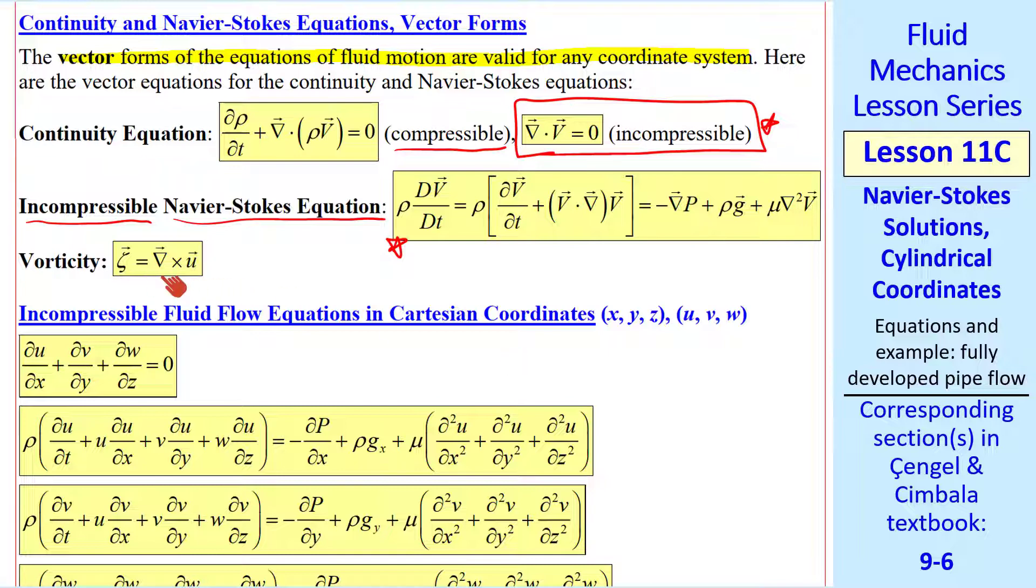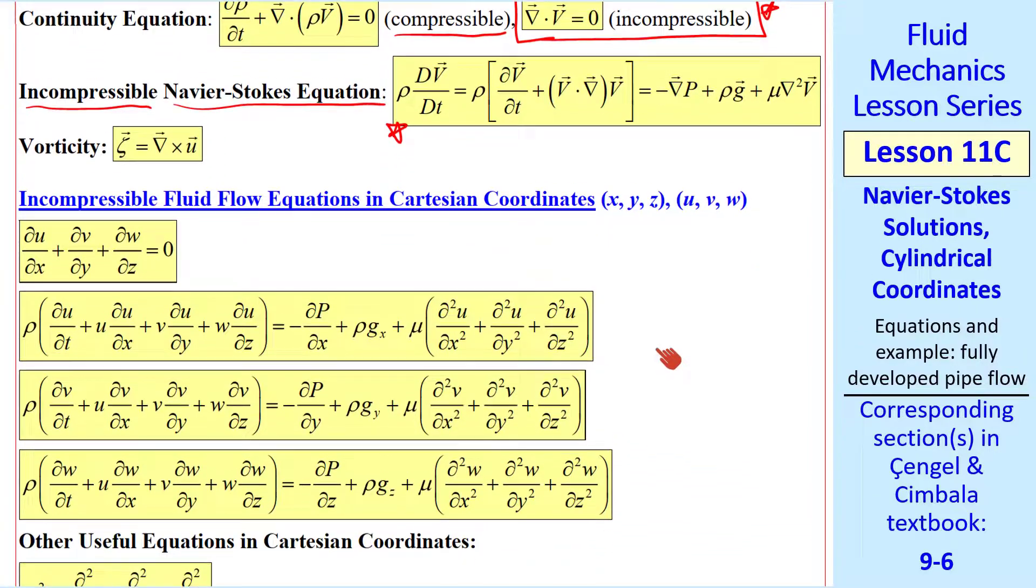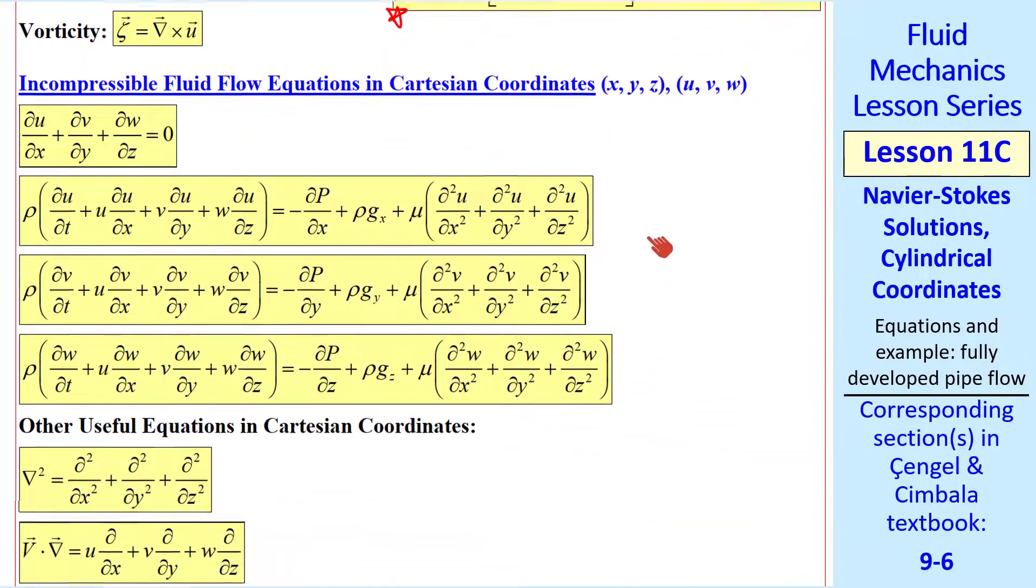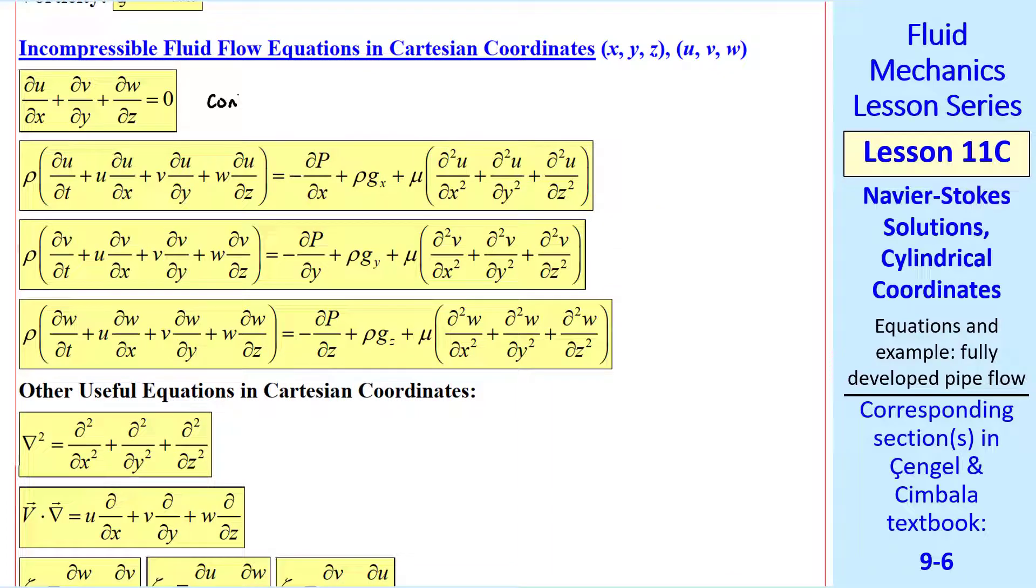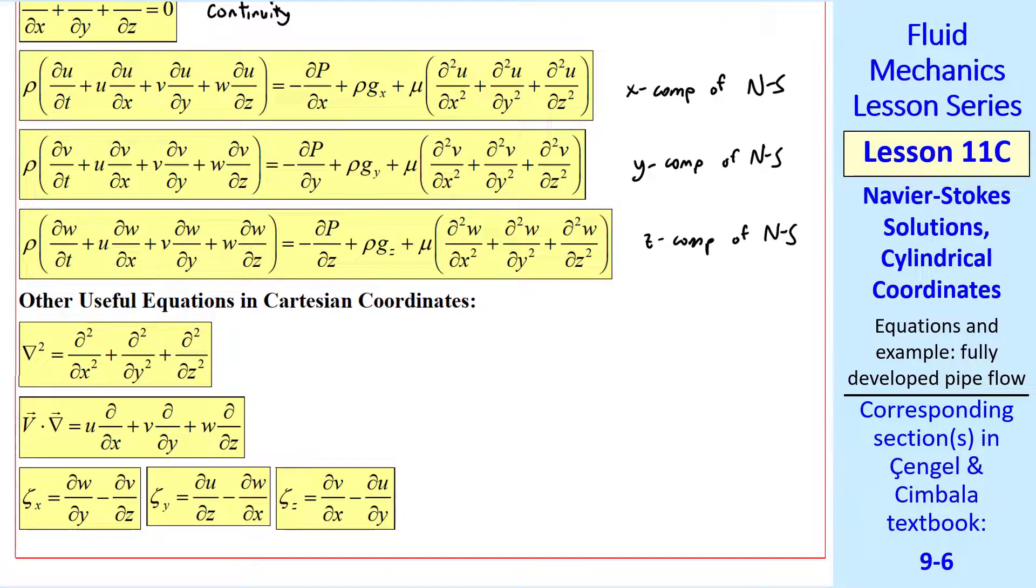This is the incompressible form of the continuity equation in vector form. Similarly, we'll limit our discussion to the incompressible Navier-Stokes equation, which is given here in vector form. Later on, we'll also talk about the vorticity, which we introduced in an earlier lesson.